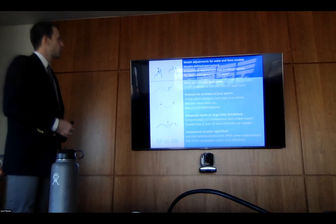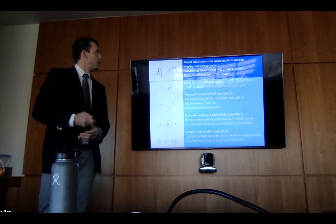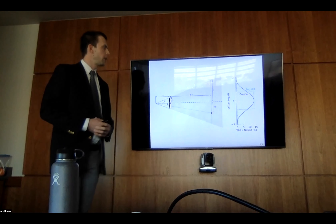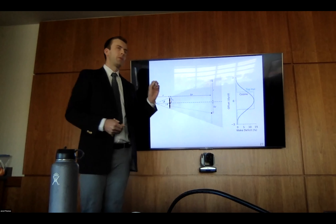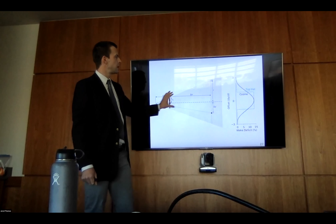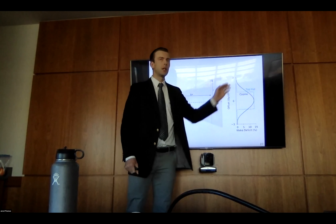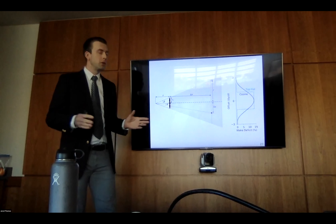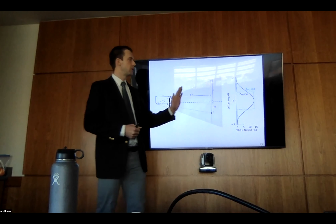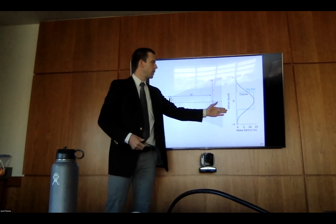Our first problem is continuity. The first model we'll discuss was developed in 1983 by Jensen. He presented two potential models, both using a linear spread — one used a top-hat profile and one used a cosine profile. The top-hat is obviously not going to work for gradient-based optimization because of the huge flat area. The cosine model is reasonable, though one problem is that it cuts off prematurely.